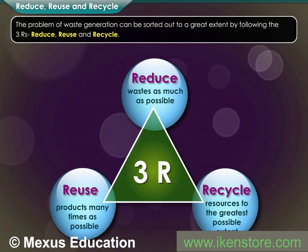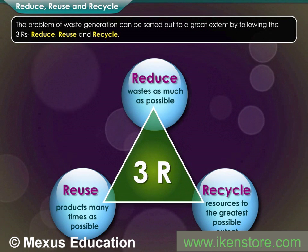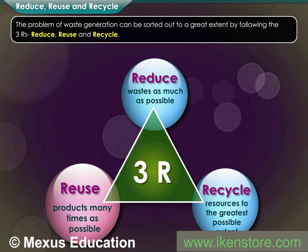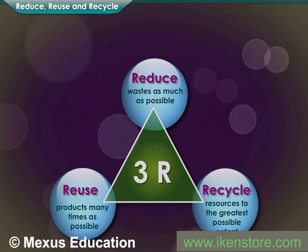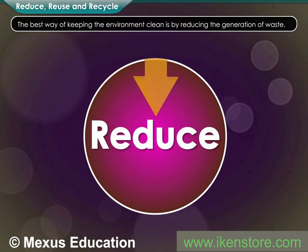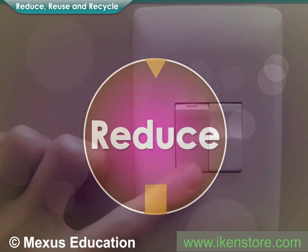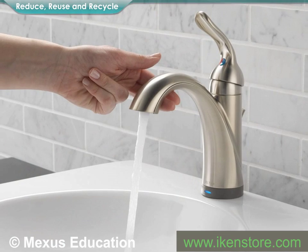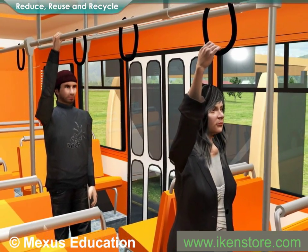The problem of waste generation can be sorted out to a great extent by following the three R's: Reduce, Reuse, and Recycle. The best way of keeping the environment clean is by reducing the generation of waste. You can start with simple steps like turning off lights and taps when not in use, using public transport, etc.